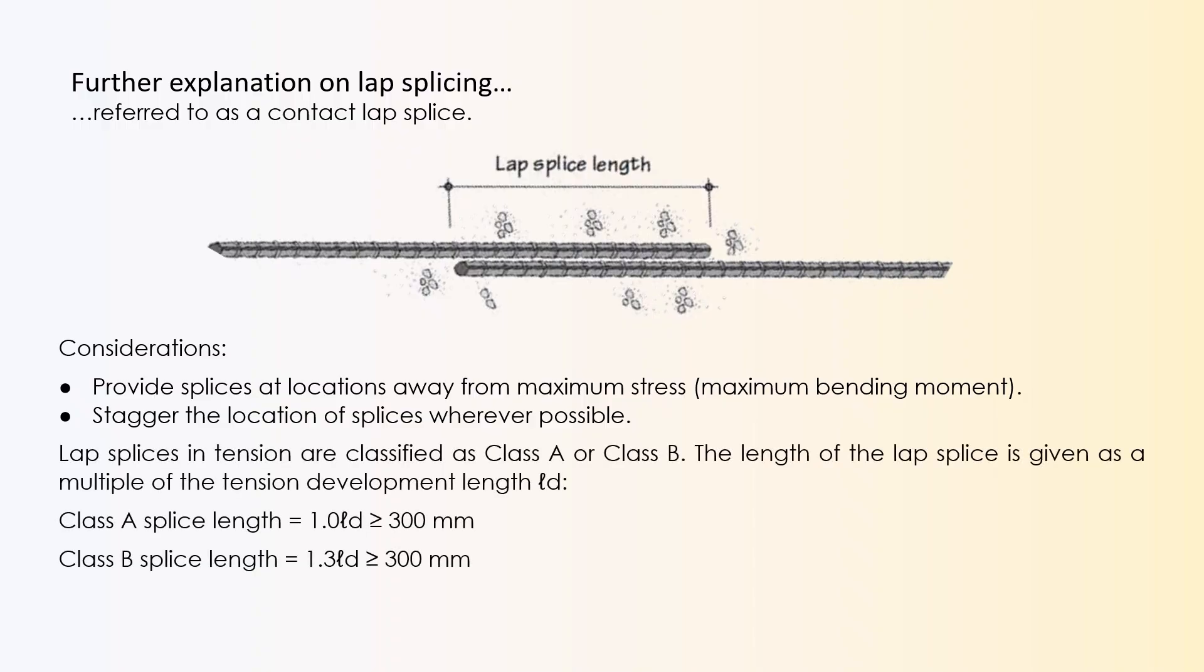The required lap splice length depends on the tension development length of the bars, the area of reinforcement provided over the length of the splice, and the percentage of reinforcement that is spliced at any one location. Lap splices in tension are classified as class A or class B. The length of the lap splice is given as a multiple of the tension development length Ld. Note that class A splice length is Ld, but must be greater than or equal to 300 mm. And class B splice length is 1.3 times Ld, but must be greater than or equal to 300 mm.